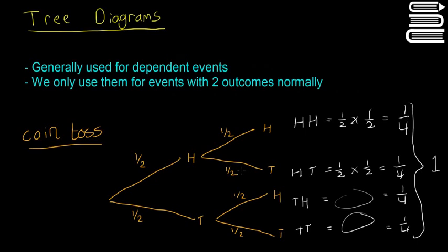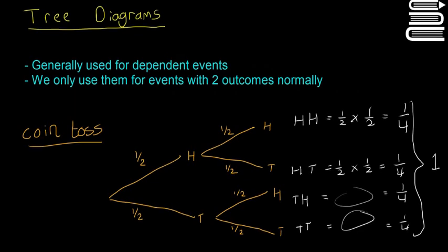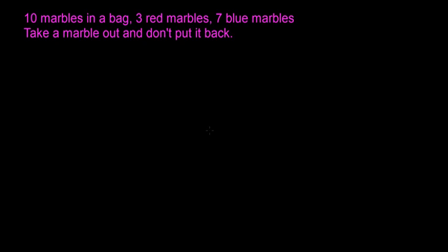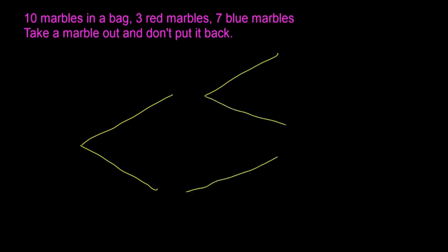Now we're going to look at an example with marbles in a bag, and the tree diagram is going to be a lot more useful. You multiply everything on the branches you take. So for this second example: we have ten marbles in a bag, three of them are red and seven are blue. We take a marble out and don't put it back. The tree diagram starts the same — two branches, and then two branches again. The important thing here is these are dependent events, so the first marble we take out affects the probabilities.